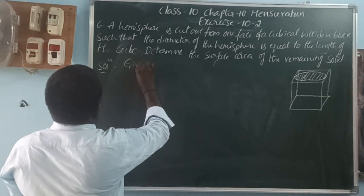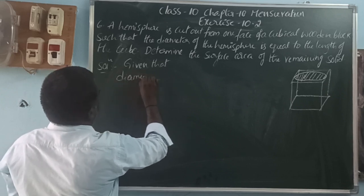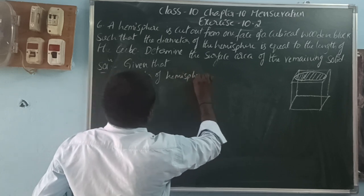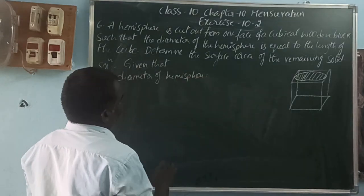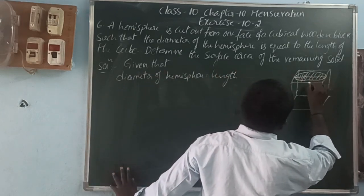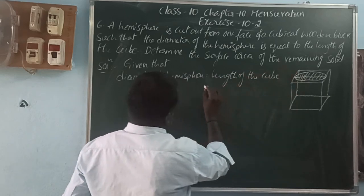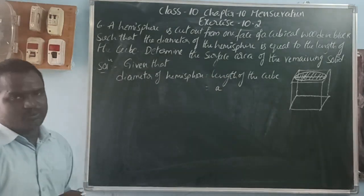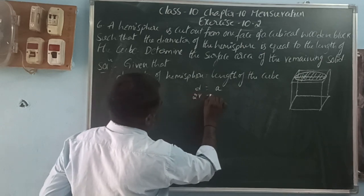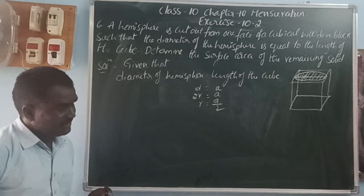Given: the diameter of the hemisphere is equal to the length of the cube. Let the length of the cube be 'a'. So diameter d = a, and since d = 2r, we get radius r = a/2.